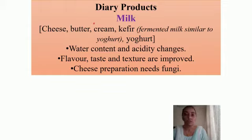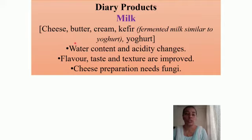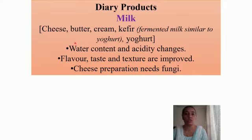The very first one is milk. From milk, we prepare different types of other dairy items like cheese, butter, cream, and kefir. Kefir is fermented milk similar to yogurt — I will be sharing a video on how kefir is prepared. It is prepared using kefir seeds and is mostly used in European countries — and yogurt. All these are various milk products prepared on a very large scale.